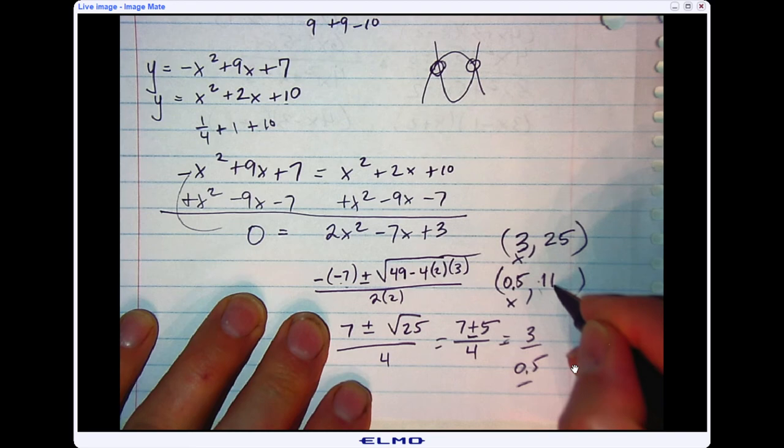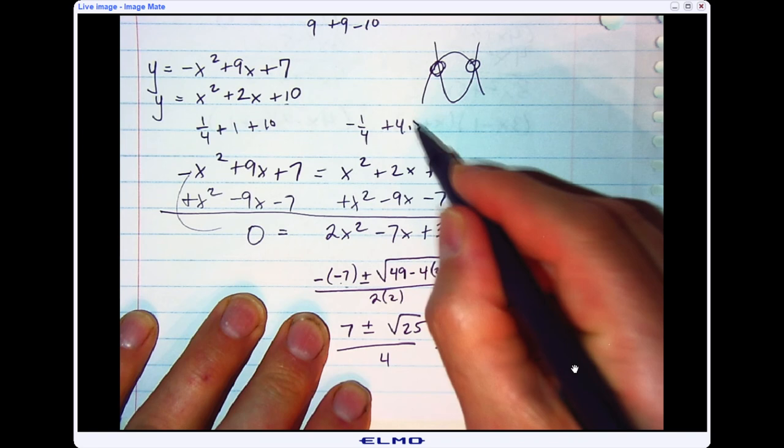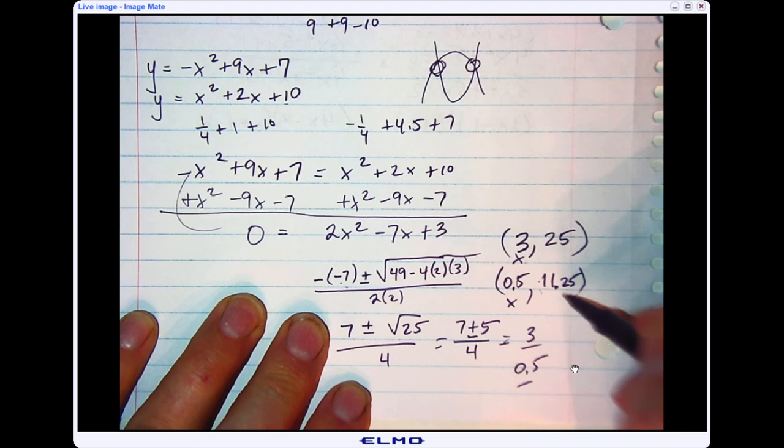Now do the same thing up on top. That would be negative 1 fourth. Half of 9 is 4 and a half. 4 and a half minus a quarter is 4.25, plus 7 is 11.25.